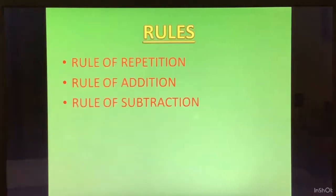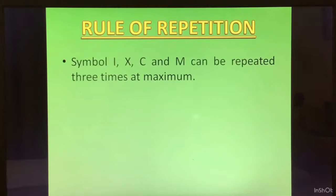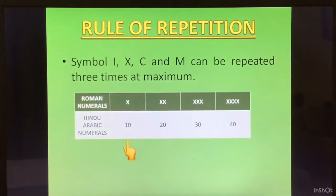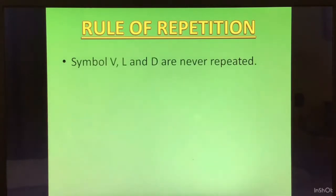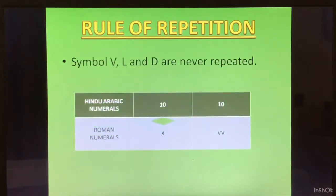Let me see the rules. There are three rules: Rule of repetition, rule of addition, rule of subtraction. Rule of repetition: Symbol I, X, C and M can be repeated three times at maximum. Look at X, X, X is 30 but 4X will not be possible. We cannot write 4X. We can repeat the symbol three times. Symbol V, L and D are never repeated. X is 10 but we couldn't able to write V, V.